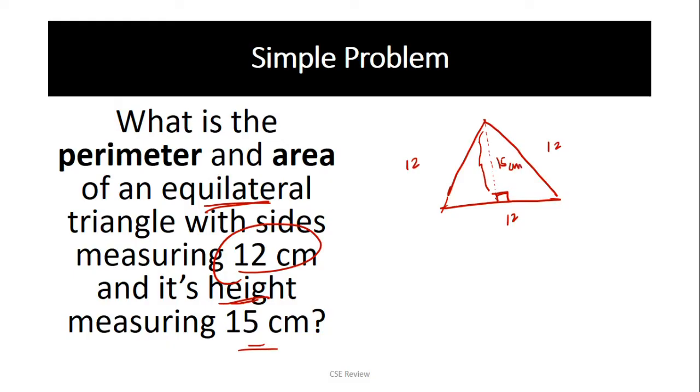Now, since we have all the sides complete, we have the base complete, the height, we can compute. The perimeter is you add all the sides. Your perimeter is 12 plus 12 plus 12 or 36 cm. That's it. That's your perimeter.